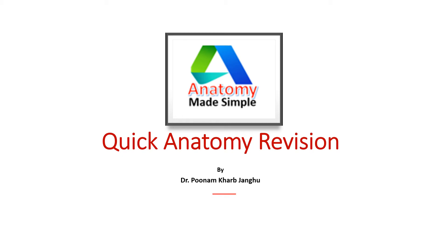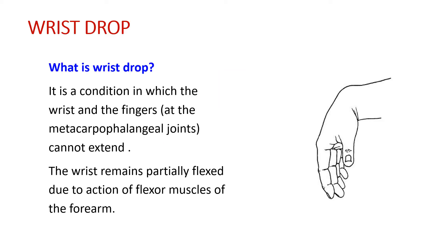Hello friends, welcome to Quick Anatomy Revision. I am Dr. Poonam Khar. Wrist drop is a medical condition in which the wrist and the fingers at the metacarpophalangeal joints cannot be extended. The wrist remains partially flexed due to the action of flexor muscles of the forearm.